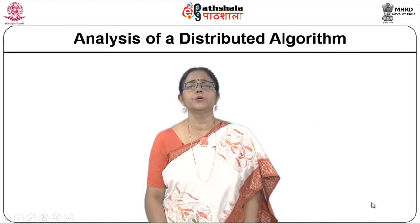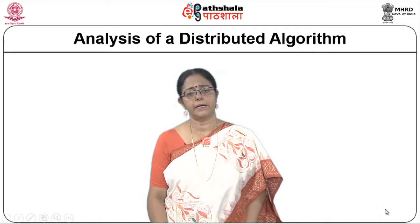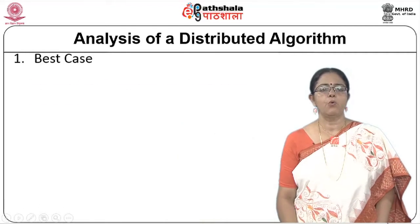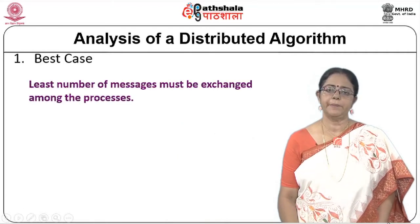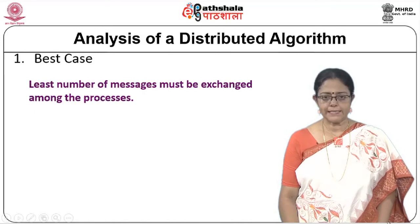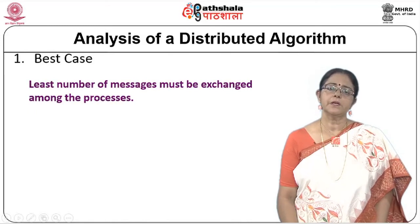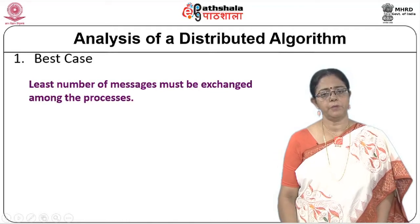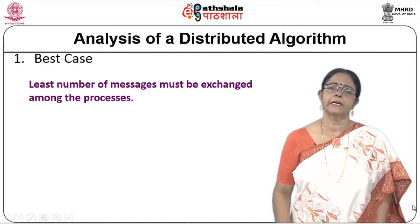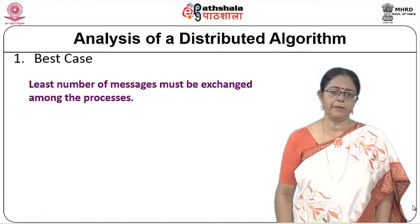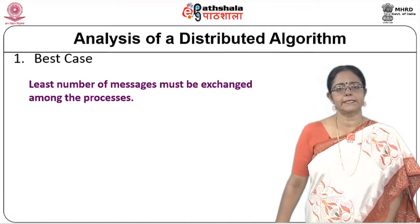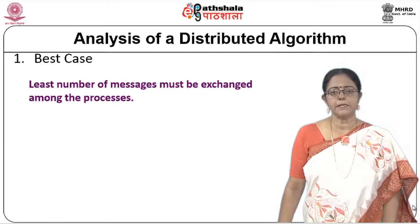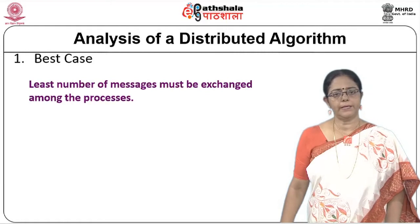To be able to do analysis of any distributed algorithm, we look at two things: the best case and the worst case. In this context, the best and worst case are measured in terms of the number of messages that have to be passed. It is a very important criterion in a distributed environment to see how many messages are required by the algorithm to complete.